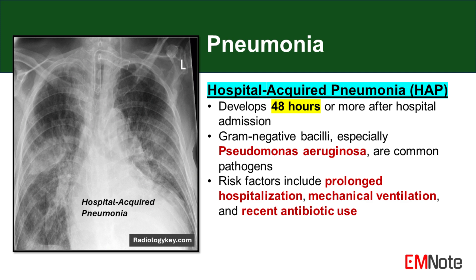Mechanical ventilation is a significant risk factor for HAP, as it bypasses natural defense mechanisms and provides a direct route for pathogens to enter the lower respiratory tract. Recent antibiotic use can alter the patient's normal flora, potentially selecting for resistant organisms.